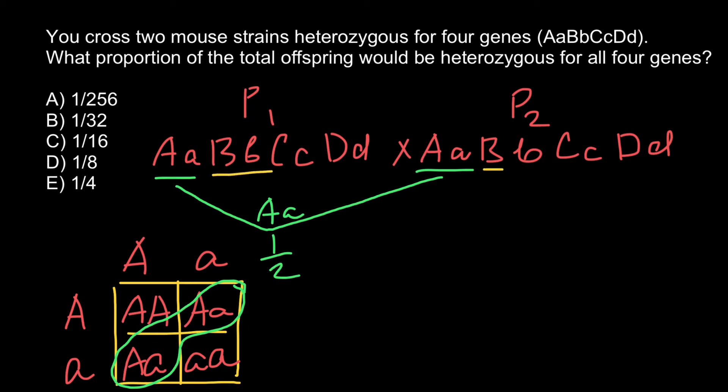If we analyze the second set of alleles for gene B, we see the same pattern. Just the letters are different, but the frequency of heterozygous in the following generation is the same: one half for Bb.